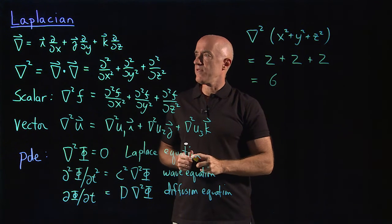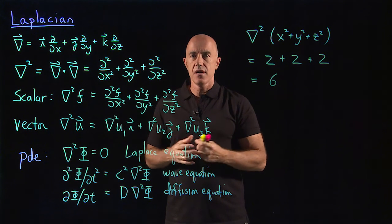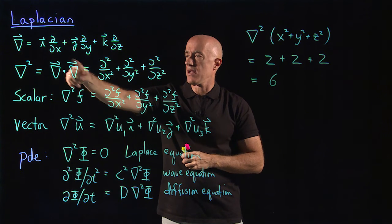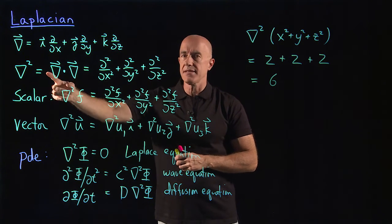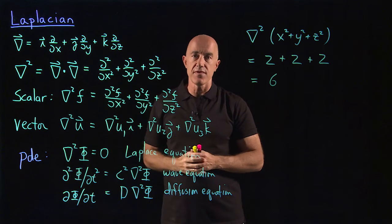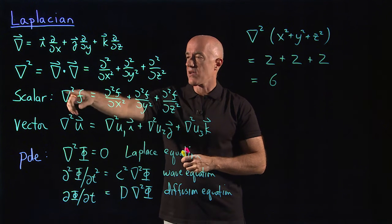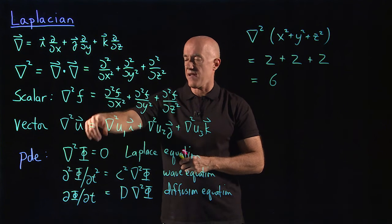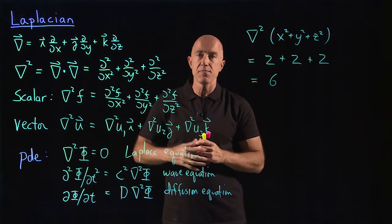So let me review. In this video then I introduce another differential operator which is just the del operator dotted with itself. It's called the Laplacian. It's the sum of all the second derivatives in Cartesian coordinates. It can act on a scalar. It can act on a vector. And it acts on a vector by acting on the components of the vector separately.